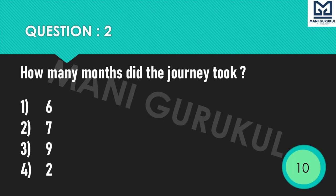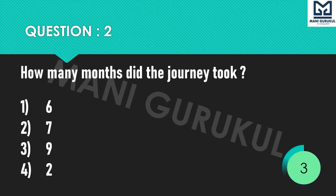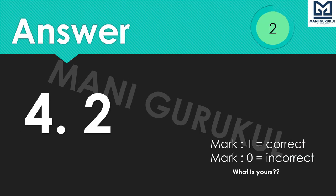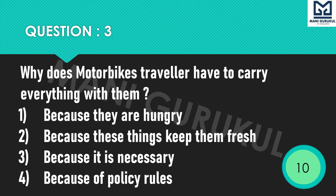Question 2: How many months did the journey take? Options: 1st — , 2nd Seven, 3rd Nine, 4th Two. Time's up. Answer is 4th, that is 2.